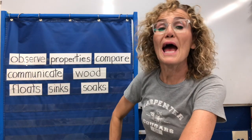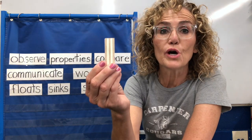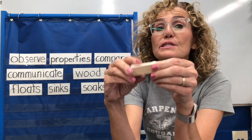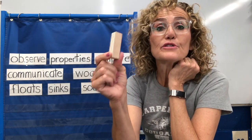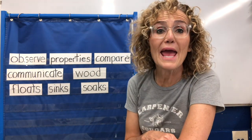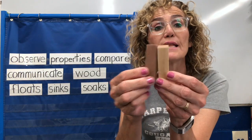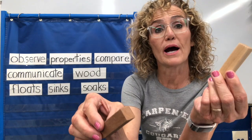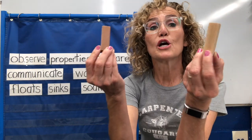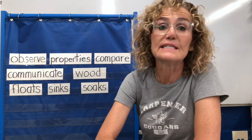Properties is how you would describe something. I have a piece of wood. I could say what shape it is, I could tell how it feels, what color. These are the properties of the wood. And I can compare things — I can compare two pieces of wood. I could say that one is darker, one is lighter, or that they're the same size. When we compare them we are noticing how they are the same and how they are different.